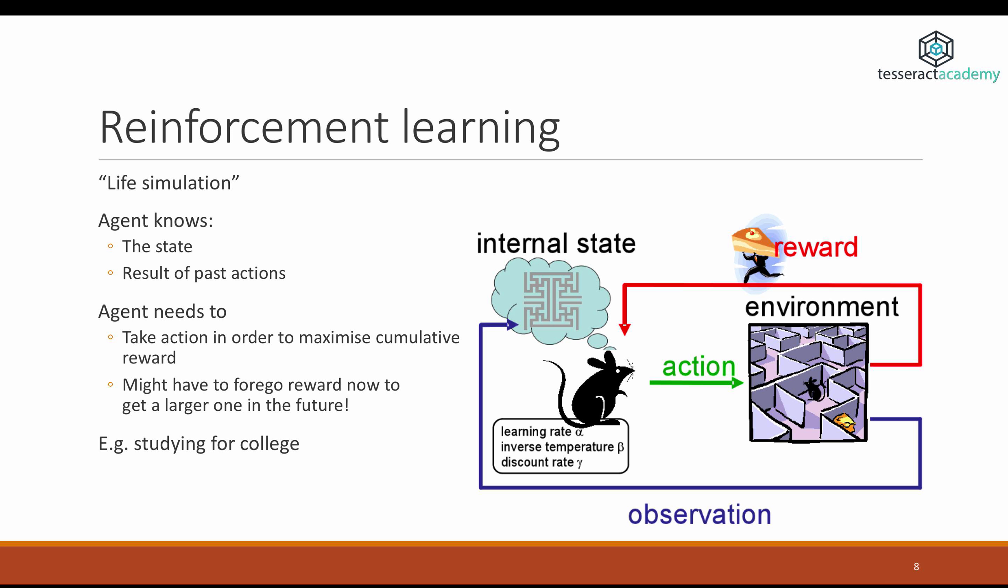We have an agent in an environment. This is the knowledge that the agent possesses: the state and the result of past actions. What the agent needs to do is take action in order to maximize cumulative reward, which means the agent might actually have to forego a reward for now in order to get a large reward in the future. In the case of a mouse, which you see in this picture, you have a mouse in a maze. It knows where it stands. It knows steps it took in the past. And the goal is to try and reach the cheese.